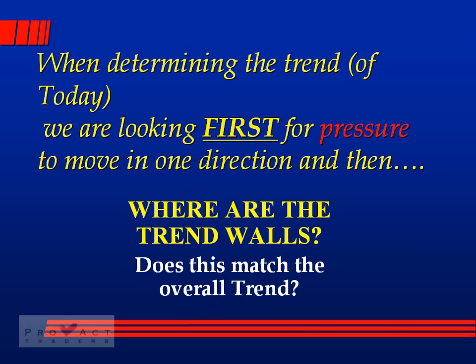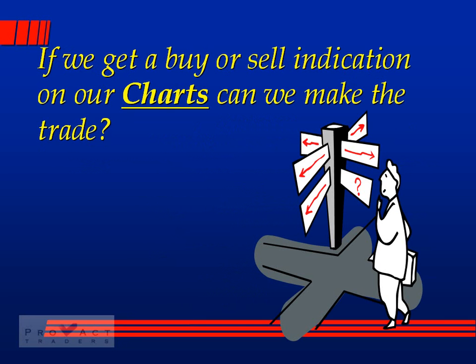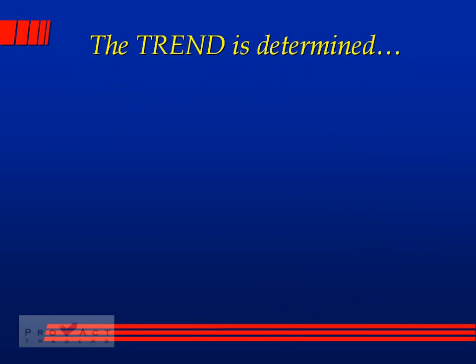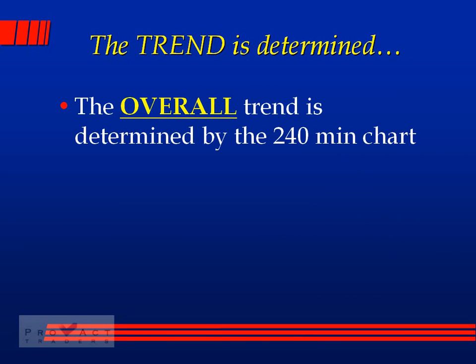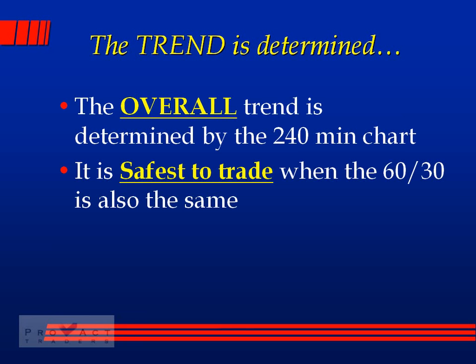If we get a buy or sell indicator — using oscillators, MACDs, moving average crossovers, or price action — the question is: can we make the trade? The overall trend is determined by the 240-minute chart, but it is safest to trade when the 60 and 30-minute charts are also in the same direction as the overall trend.